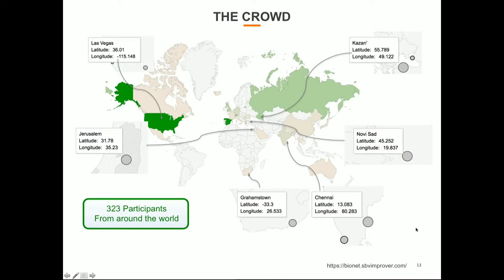This is the map of the crowd — dynamically updated every time a new scientist joined the challenge. Overall, there were 323 participants across the two rounds, and they came from everywhere: a lot of people from the United States, a lot from Spain, people from Russia, and from a number of other countries — 23 countries total participated.